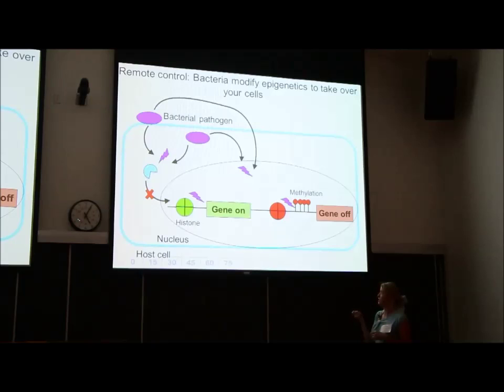By modifying the histone and the methylation pattern, the host turns its own genes on and off, and bacteria can co-opt this process and make different modifications on the histone or in the methylation pattern to turn genes off.